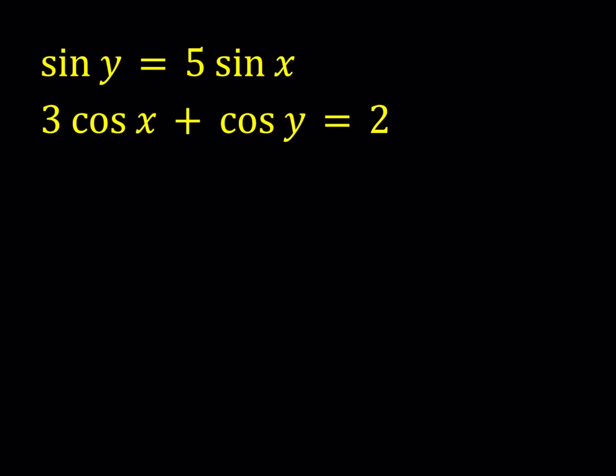We're going to start with the second equation. In the second equation, I'm going to isolate cosine of y. The reason for that is I'd like to square both sides, but I would like to isolate it first. So the second equation can be written as cosine y equals 2 minus 3 cosine x.